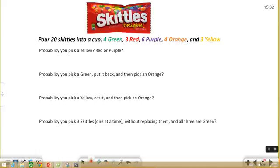So the probability of picking a yellow Skittle out of our cup. Well, there's three yellows and there's 20 possible ones. So 3 out of 20 is the probability for yellow.